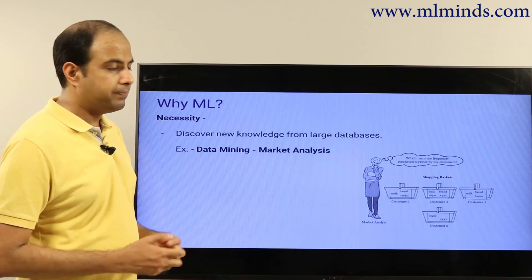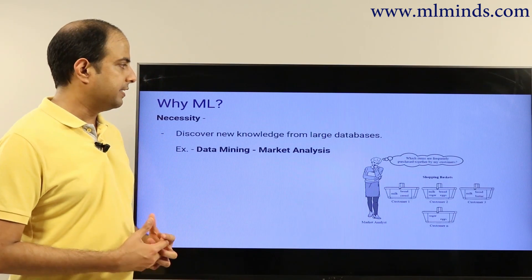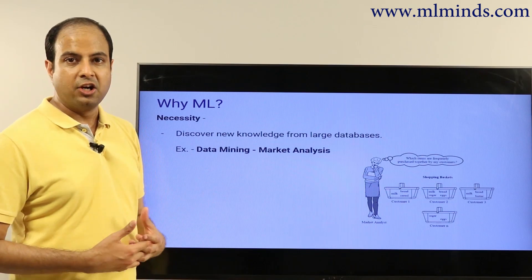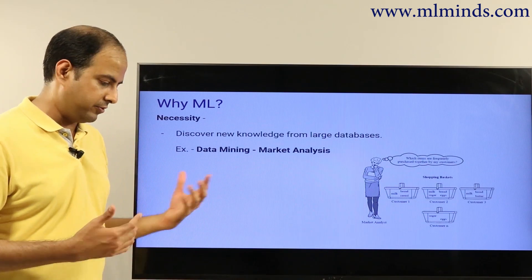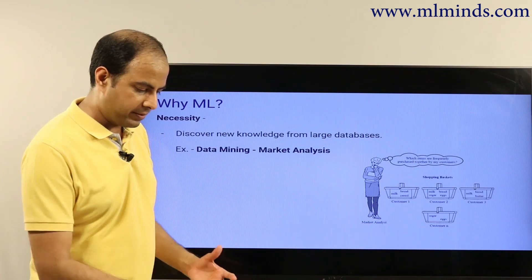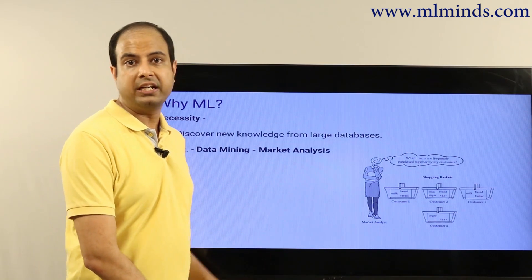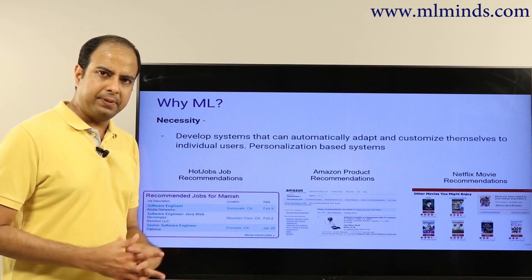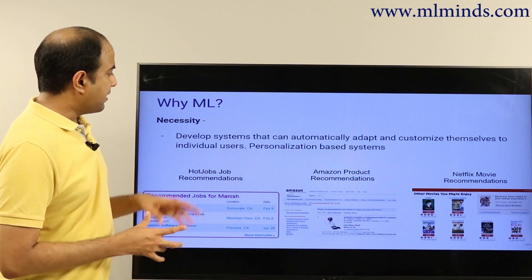Frequently co-bought patterns can be used to come up with better store layout designs, to design discount bundles, or for cross-selling products — for example, when a customer buys product X, can you recommend product Y? That's yet another application of machine learning.